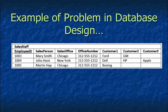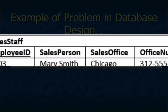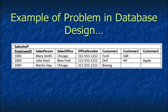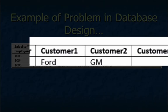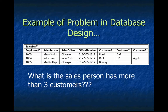So let's consider a database that somebody built and they have a problem with it. Do you see any problems here? It looks like we're trying to keep track of the employees in our business. We have their name, their sales office, and phone number. However, the database is supposed to keep track of the customers they serve, and so they created fields called customer one, customer two, customer three. What would happen if your salesperson would have more than three customers? Then your database doesn't work anymore. It's designed wrong.